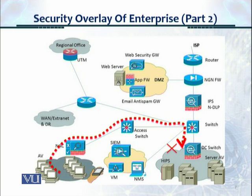This is traffic from a user headed to a data center server. In this particular case, the subnet the user belongs to is not authorized to access the data center switch or the data center, and hence the data center firewall will block this user.